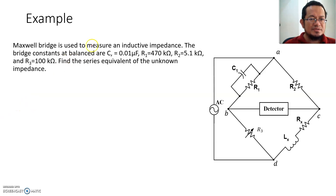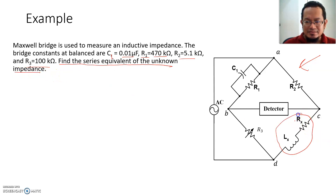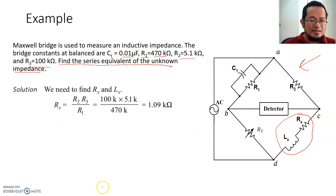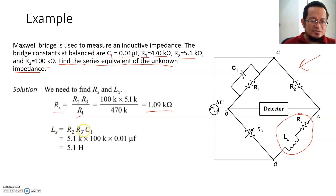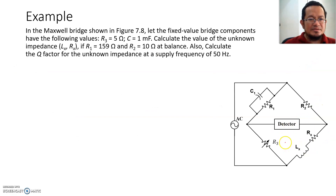Let's take a look at an example problem with Maxwell's bridge. Given bridge constants: C1 equals 0.01, R1, R2, and R3 are given values. The question asks you to find the series equivalent of the unknown impedance, which is RX and LX. Using the formula RX equals R2 multiplied by R3 divided by R1, you plug in the values to get RX equals 1.09 kΩ. For LX, using LX equals R2 multiplied by R3 multiplied by C1, you plug in the values to get approximately 5.1 henry.